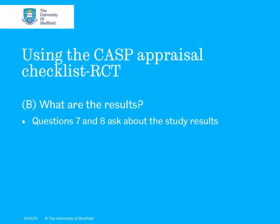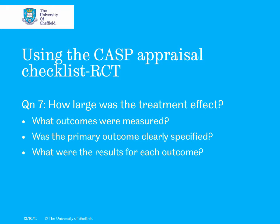We move on to the next questions, which focus on the results. Questions seven and eight ask about the study results. Question seven is about the treatment effect — trying to establish what outcomes were measured and whether the primary outcome is clearly specified. In trials, we often have primary outcomes and secondary outcomes.